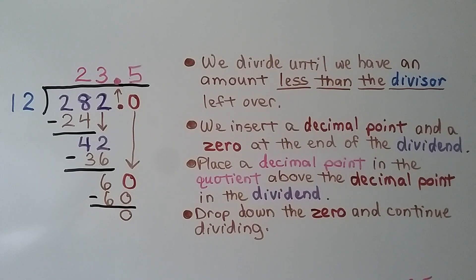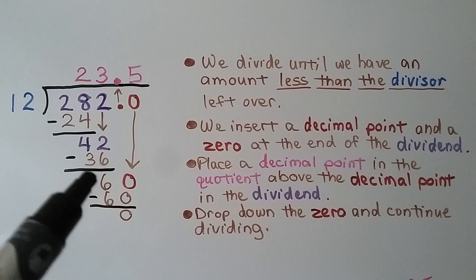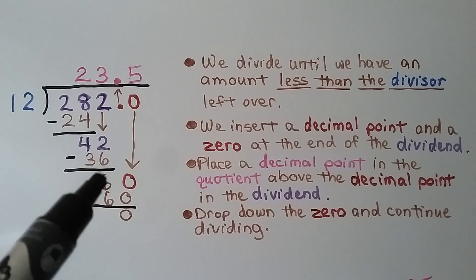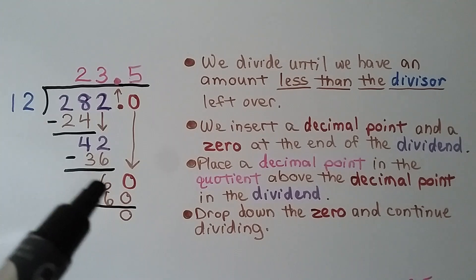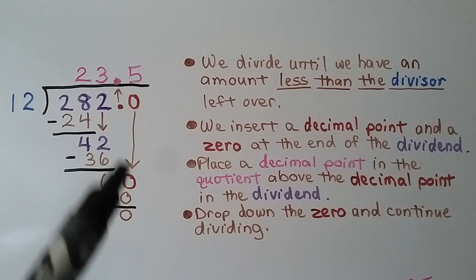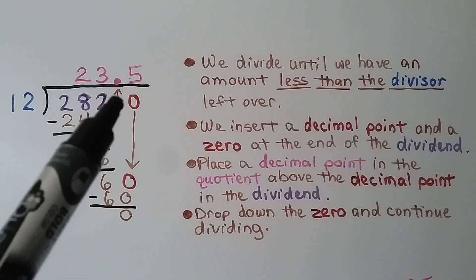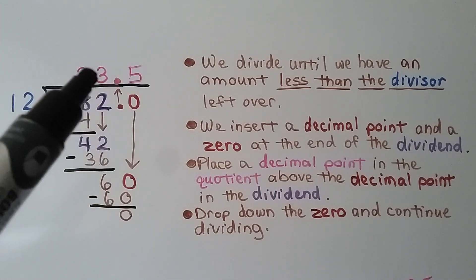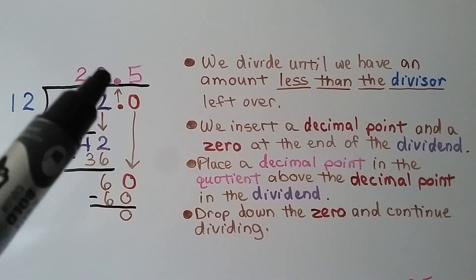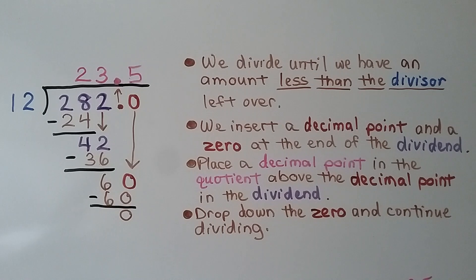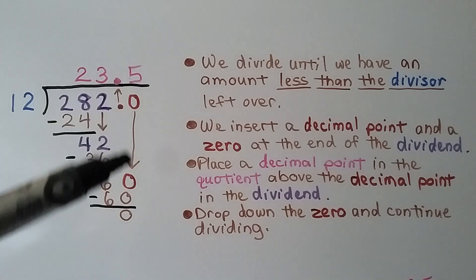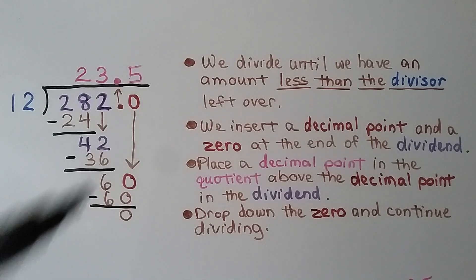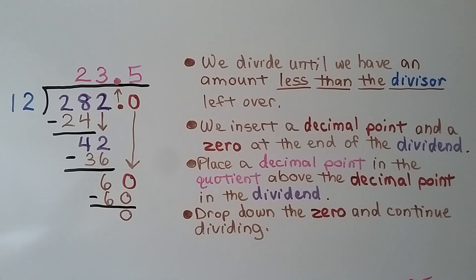We divide until we have an amount less than the divisor. When we got to the 6, it was less than the divisor 12. We insert a decimal point and a zero at the end of the dividend and place a decimal point in the quotient above the decimal point in the dividend. We drop down that zero and continue dividing.